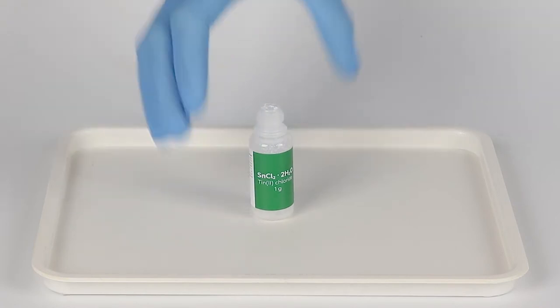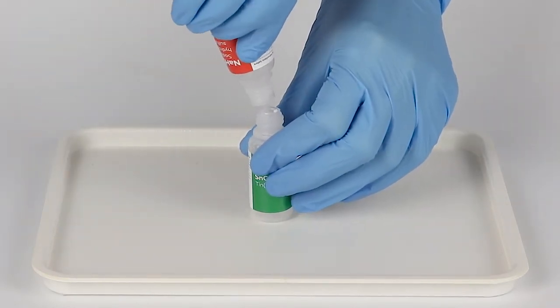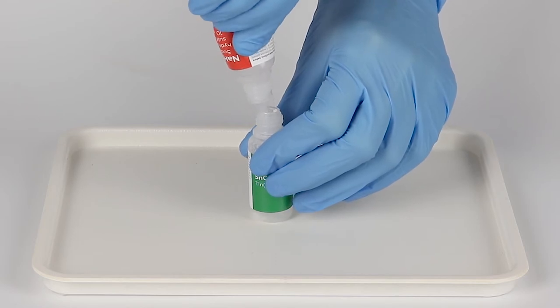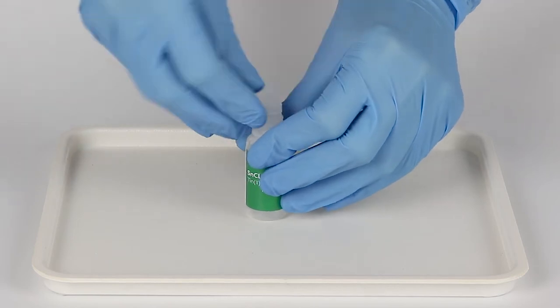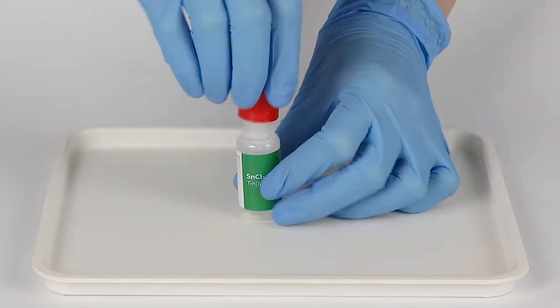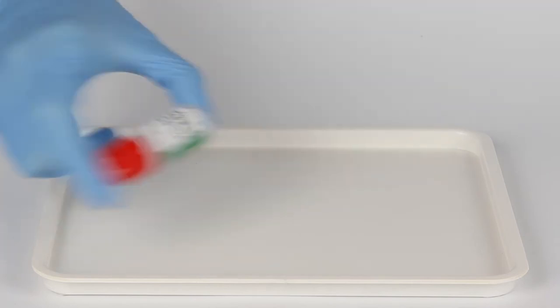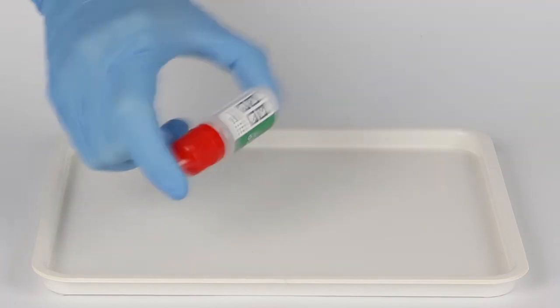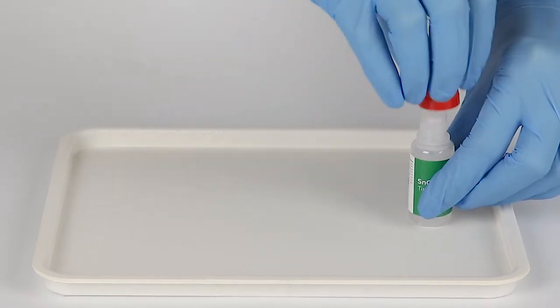Open the bottle of tin chloride and pour one bottle of sodium hydrogen sulfate solution into it. Securely insert the tip and close the bottle using the red cap. As an alternative, you can use the white cap from the bottle of sodium hydrogen sulfate solution. Shake the bottle well to mix the contents.